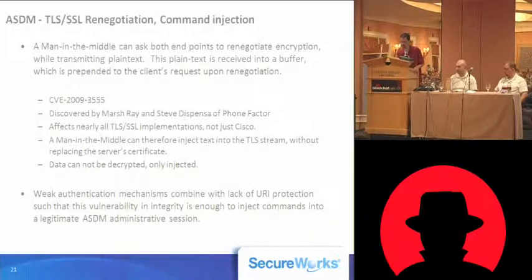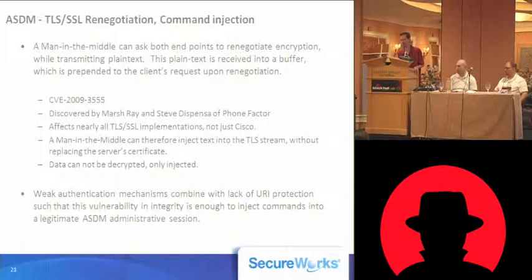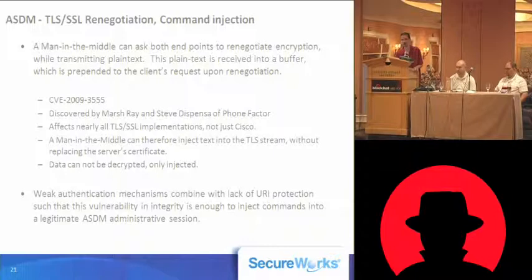There's a lot that can be said about that bug, but the short version is that a man-in-the-middle can ask both endpoints to renegotiate their encryption settings. During that process, there's a window when they can send plaintext to the server, and the server will accept it and prepend it to the request received encrypted from the client. This allows us to inject text into an SSL encrypted session. You can't decrypt data or view what's going on, but you can inject arbitrary plaintext at the beginning of a request. Combined with the weak authentication mechanisms inherent in ASA and ASDM's architecture, you can inject a URI at the beginning of the packet.